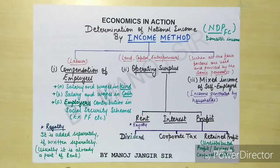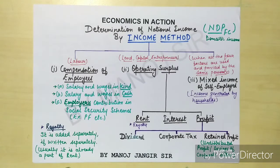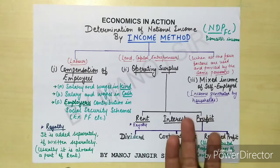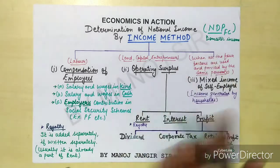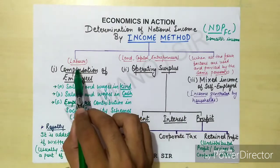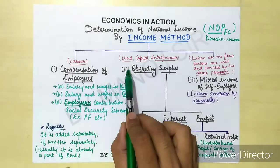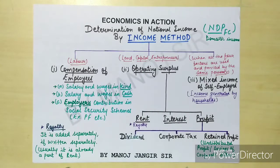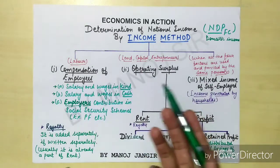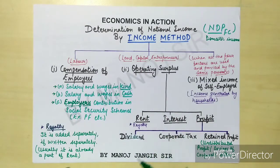When we determine national income with the help of income method, it is the summation of factor incomes — the incomes which all the factors of production are getting. The main factors of production are labor, land, capital, and entrepreneur.